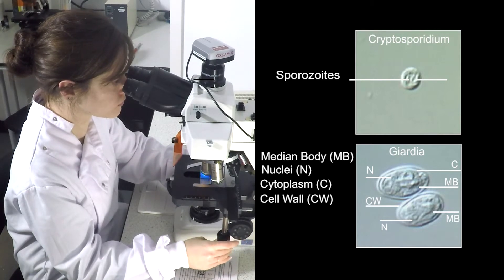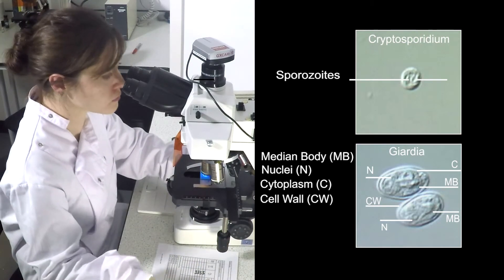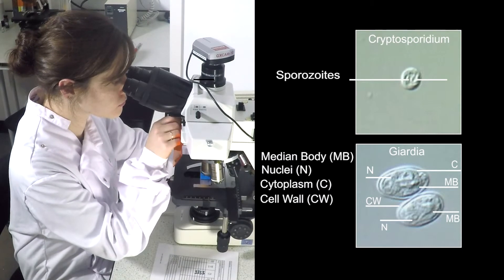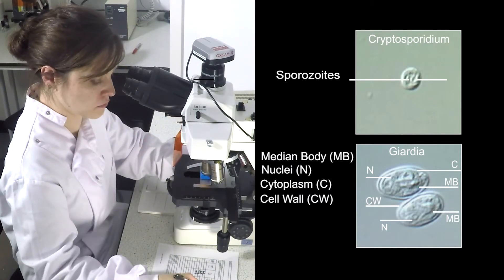Analysis for characteristic internal structures performed using DIC microscopy should be performed at at least 1000 times magnification. Sporozoites associated with Cryptosporidium oocysts should be recorded.